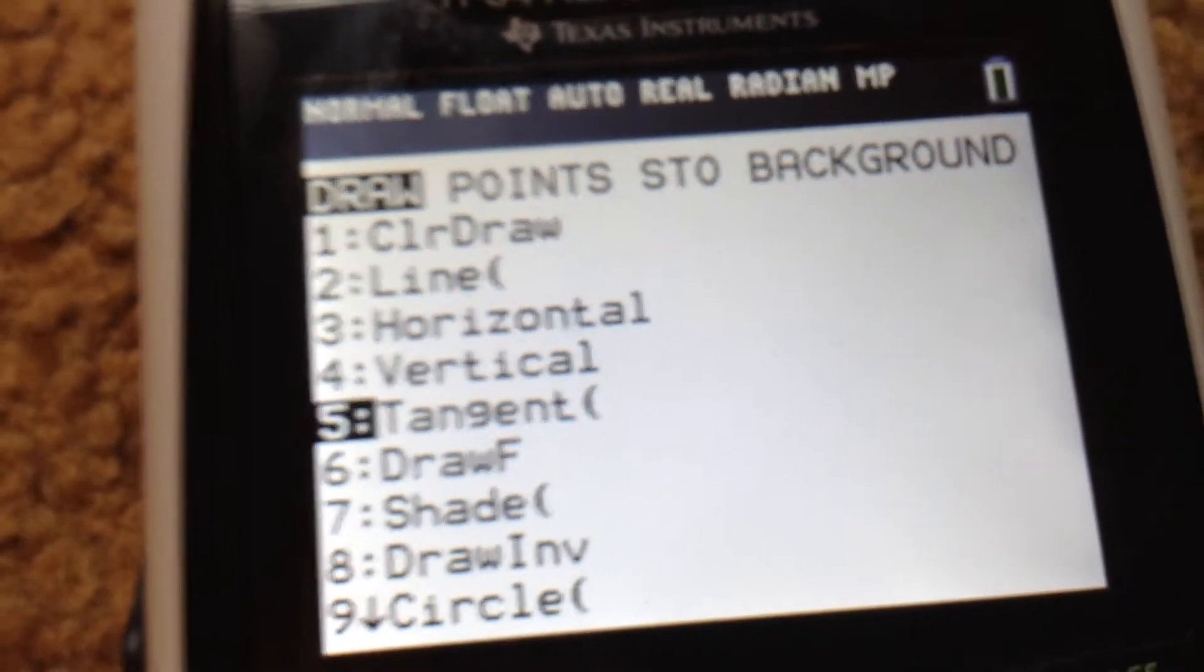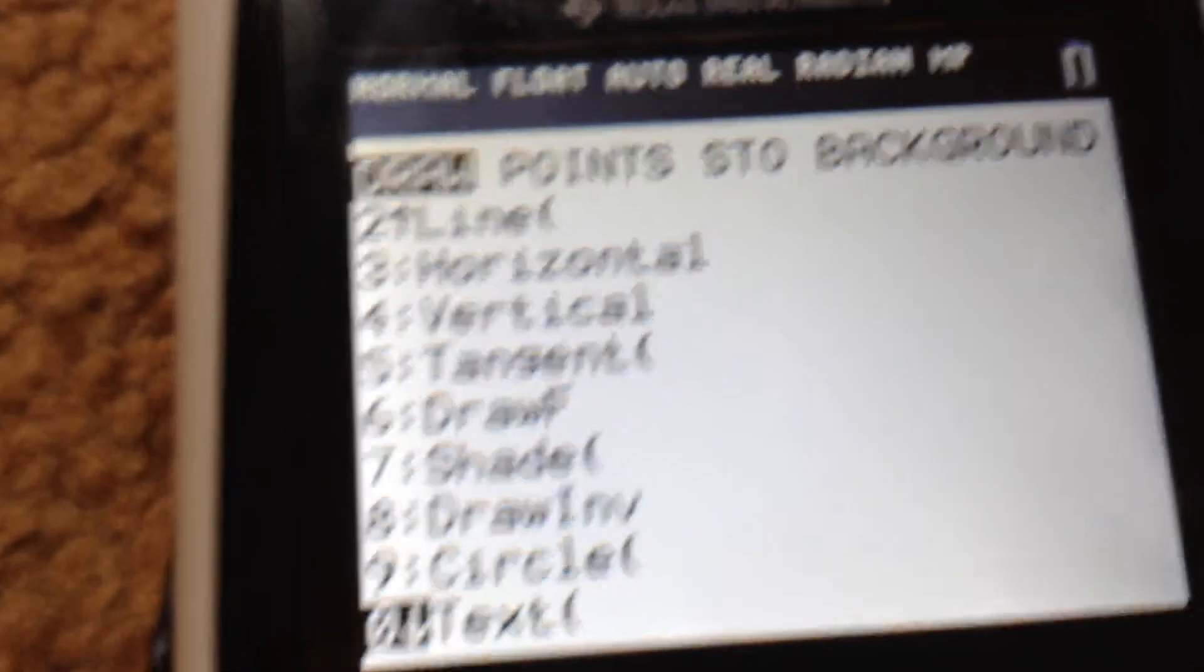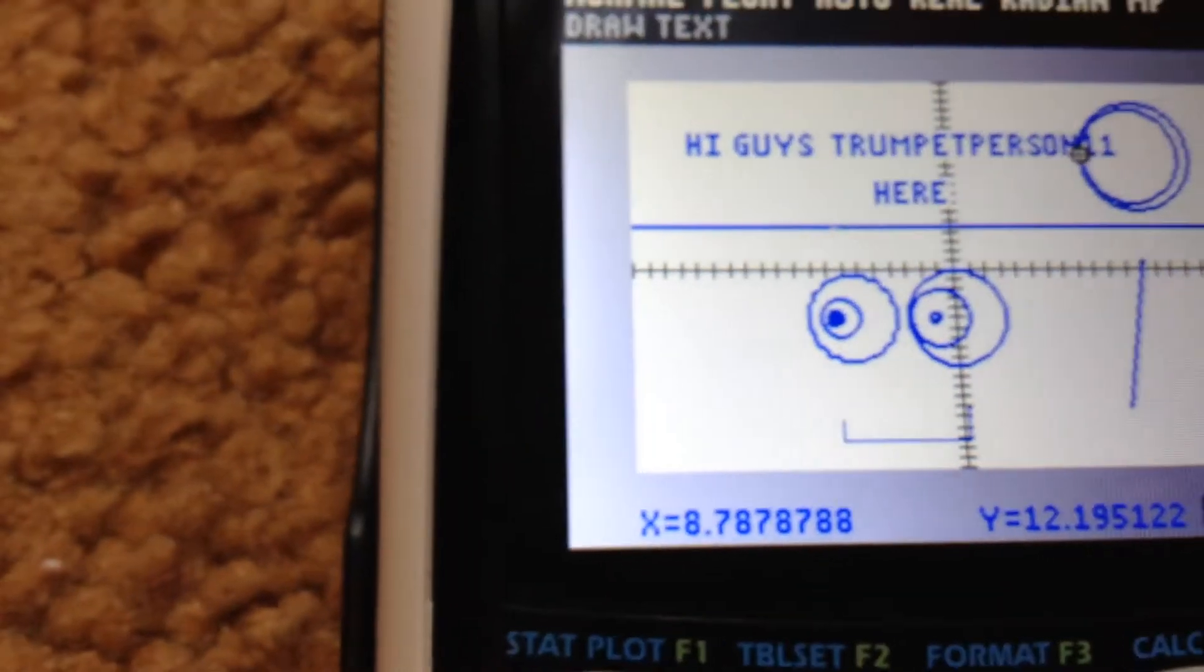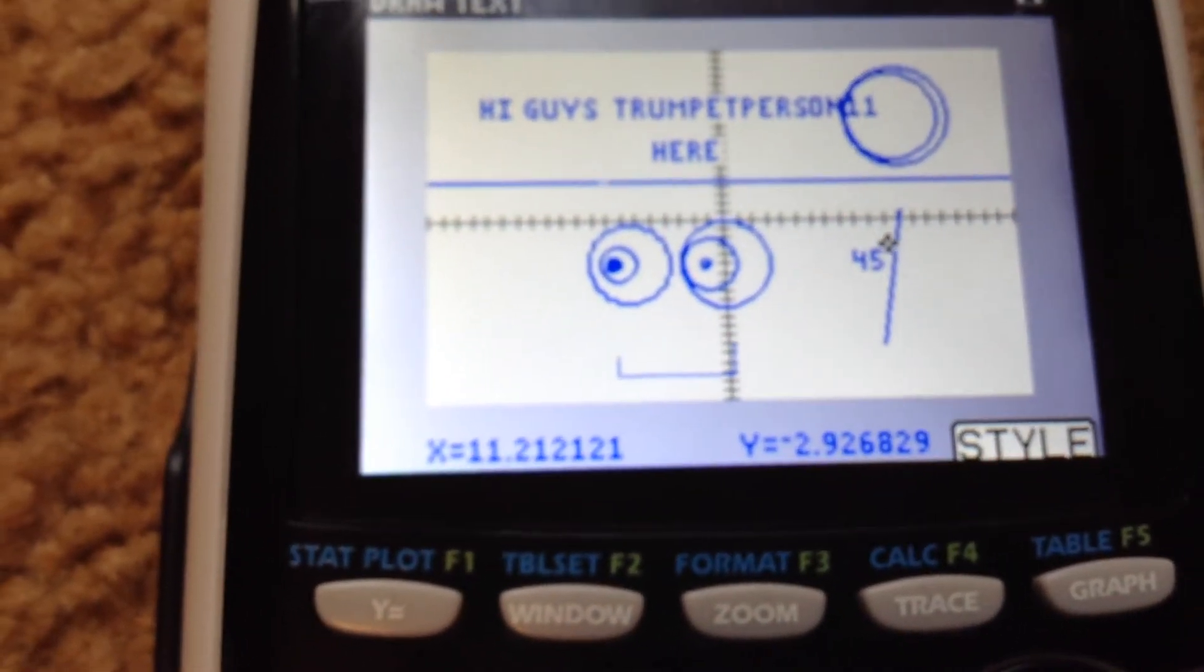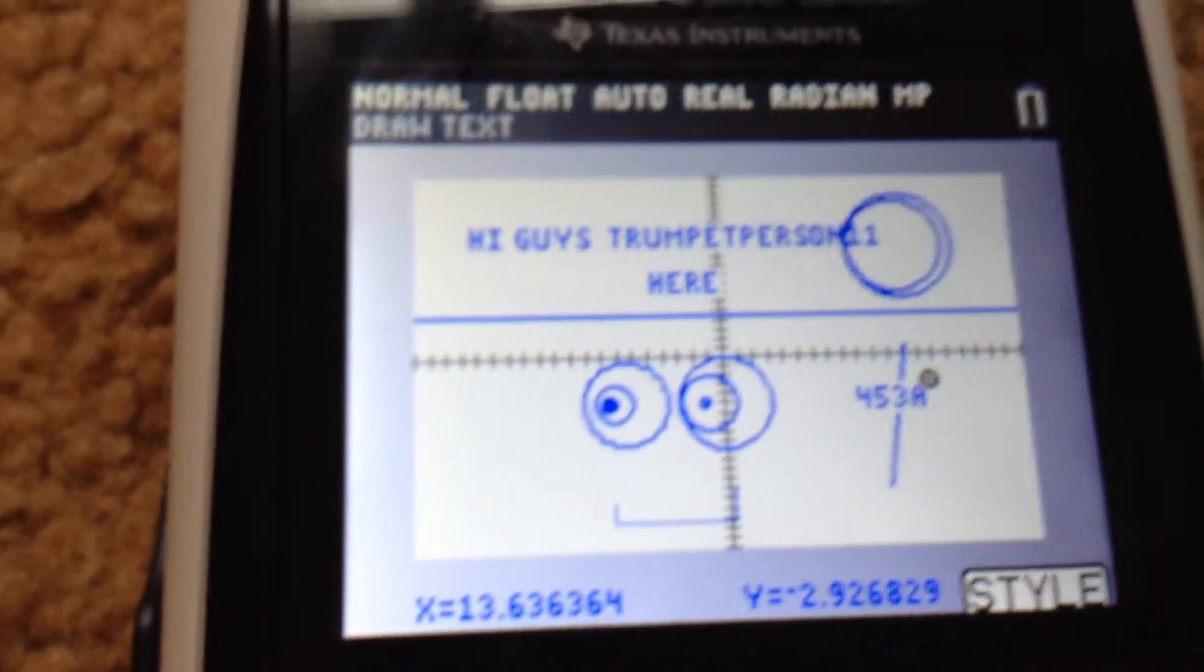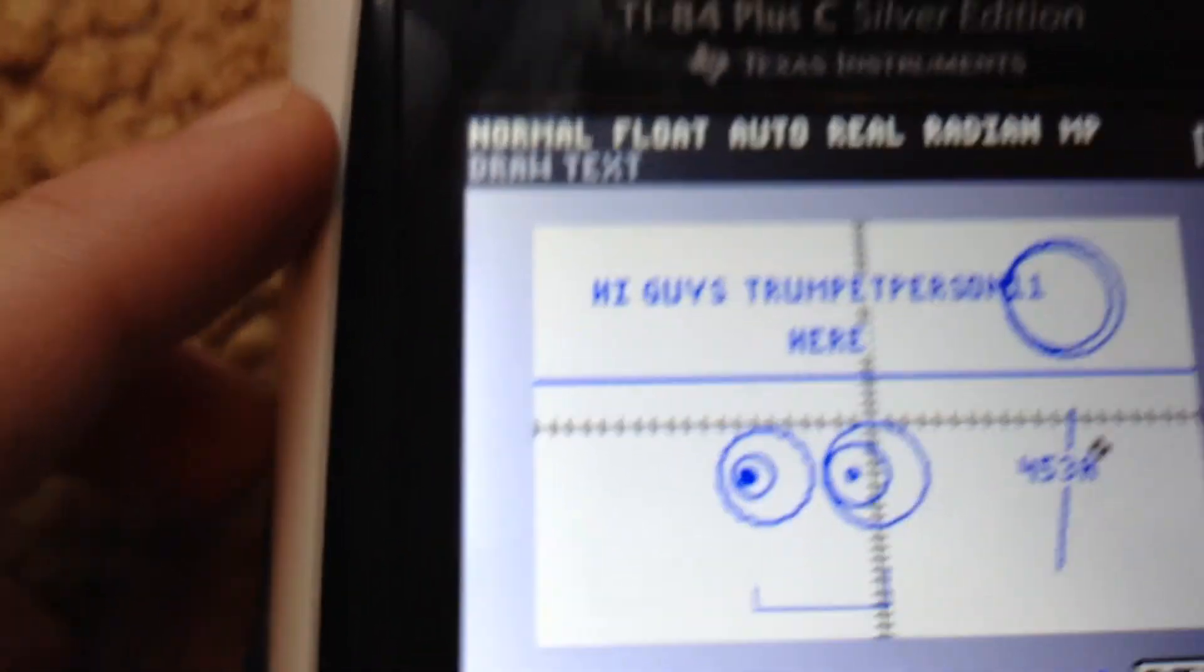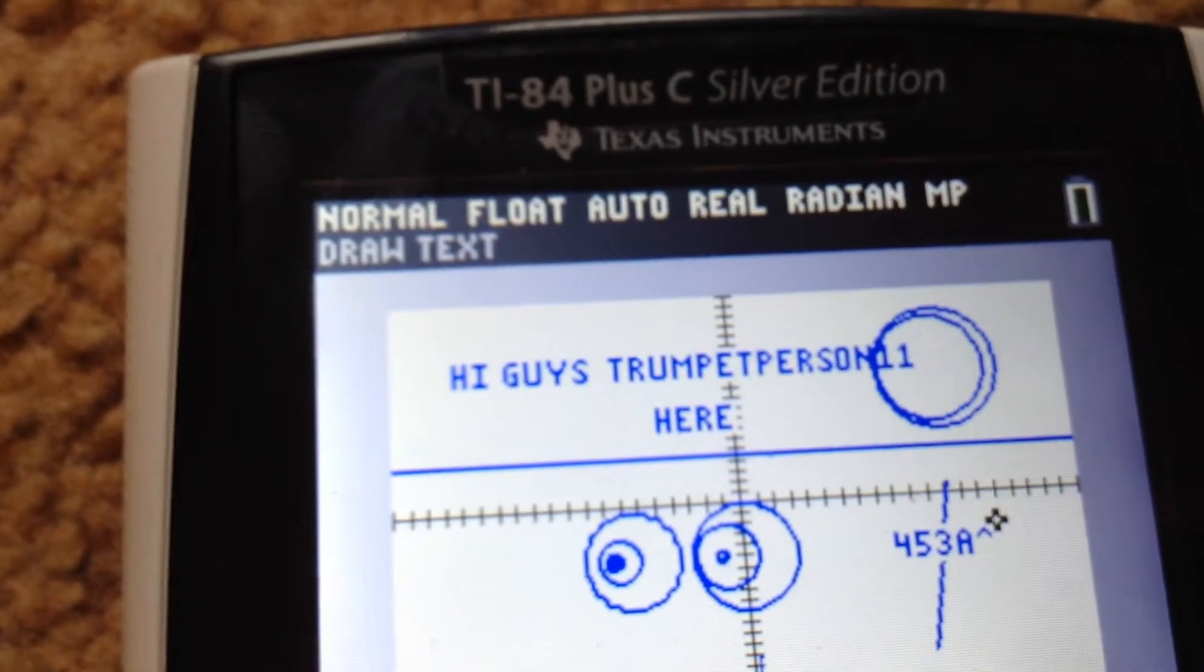Then the next one is text, which is pretty cool because you can type on the calculator graph screen. You can get all the numbers, you can get letters too. You can get almost anything. You can put something to the power of eight.